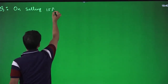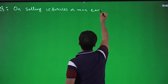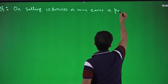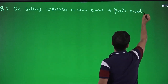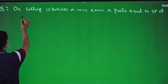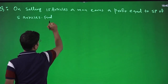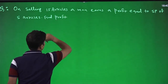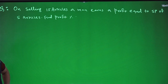On selling 15 articles, a man earns a profit equal to the selling price of 5 articles. Find profit percent. The three key facts: 15 articles are being sold, profit is earned (not loss), and profit equals SP of 5 articles.